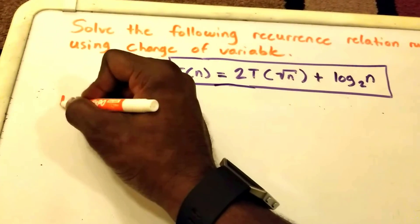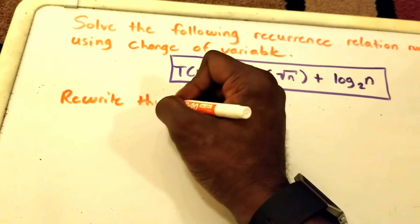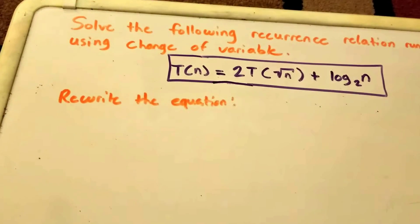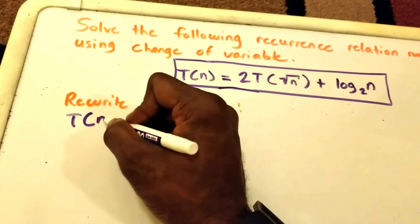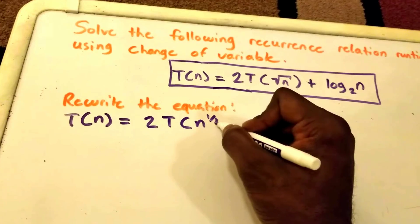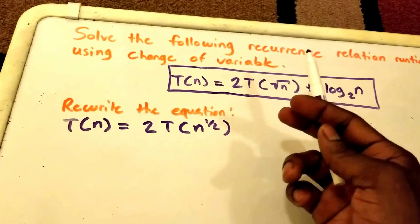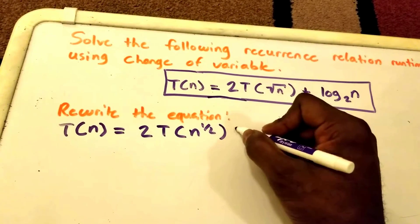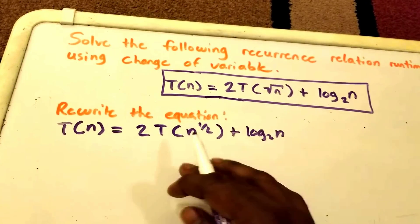So we're going to rewrite the equation. Our equation will look like this: T(n) = 2·T(n^(1/2)) + log₂(n), because n to the power of one half is equivalent to the square root of n. This is just to make it look a little bit better.